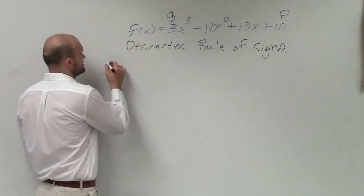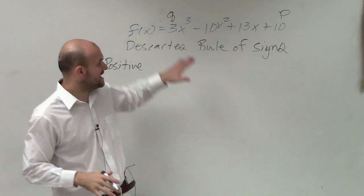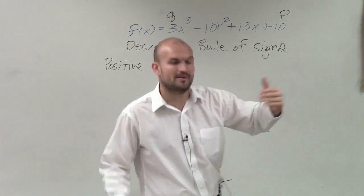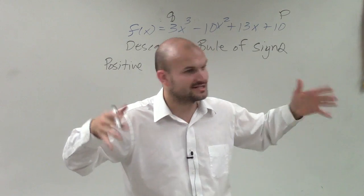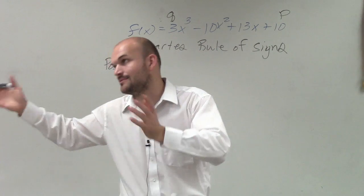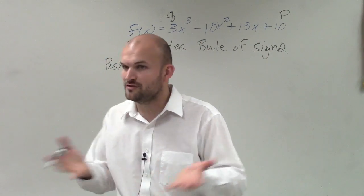For positive real zeros, take the signs of each monomial. Remember a polynomial? That definition: a_n × x^n + a_(n-1) × x^(n-1), and so on. A polynomial is a sum of monomials.